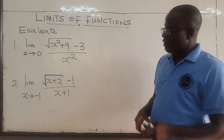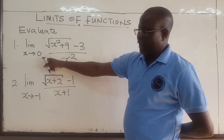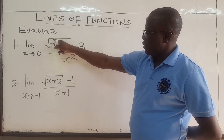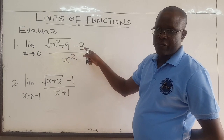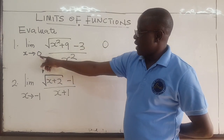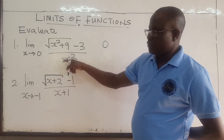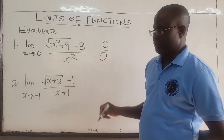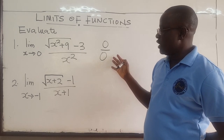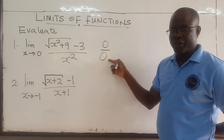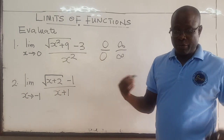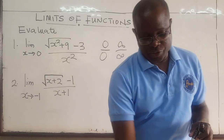Notice that when x goes to 0, if x is 0, you have 0 here — the square root of 9 is 3, and 3 minus 3 is 0. So up here you get 0. But as x goes to 0, the denominator also becomes 0. So you're going to have 0 over 0, and this is what is called an indeterminate form. Whenever you have 0 over 0 or infinity over infinity, you have an indeterminate form.